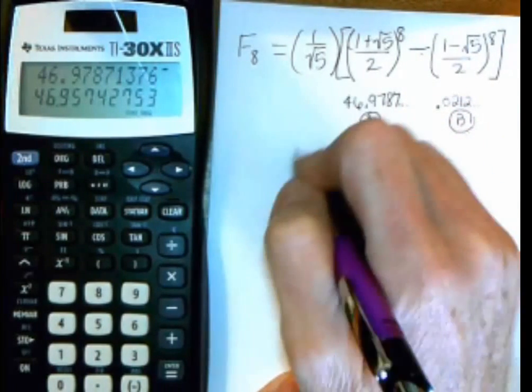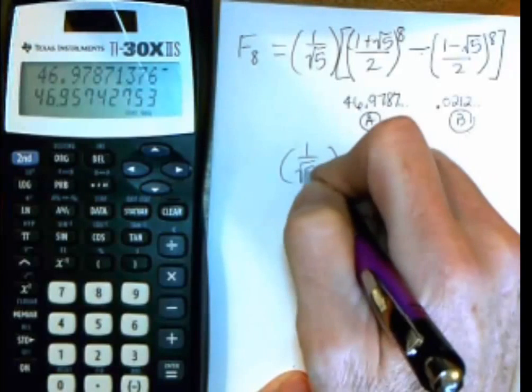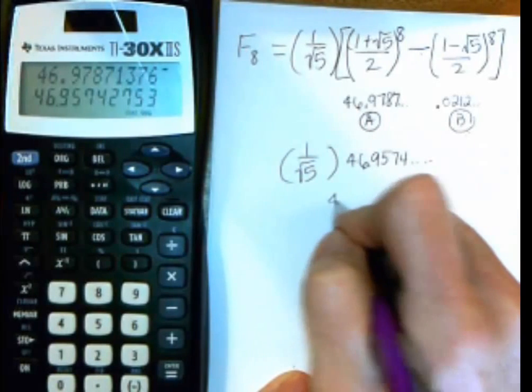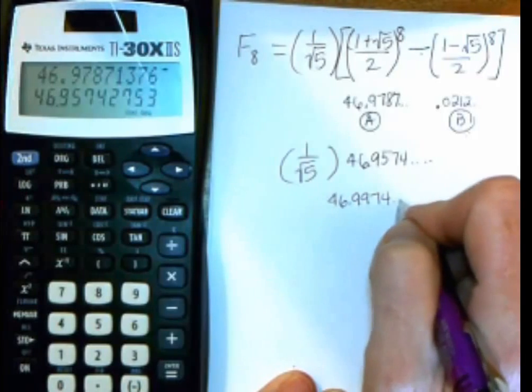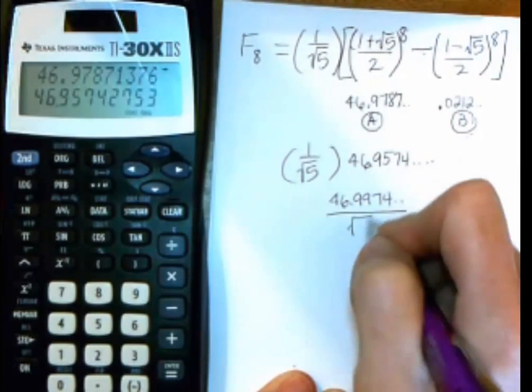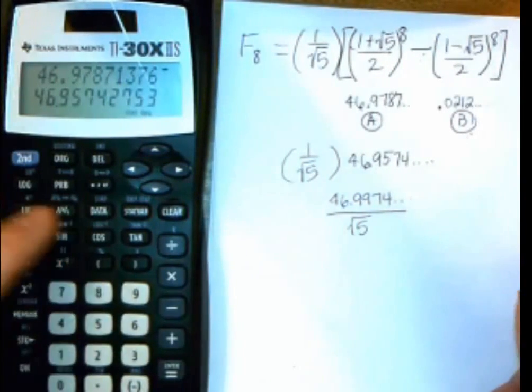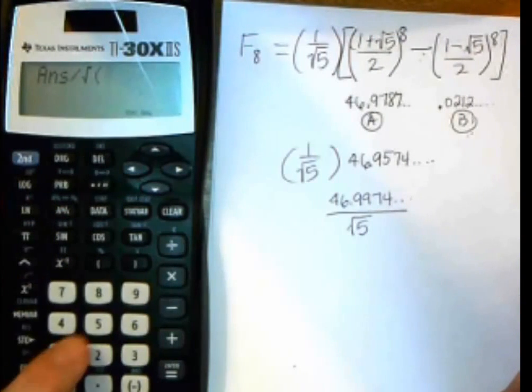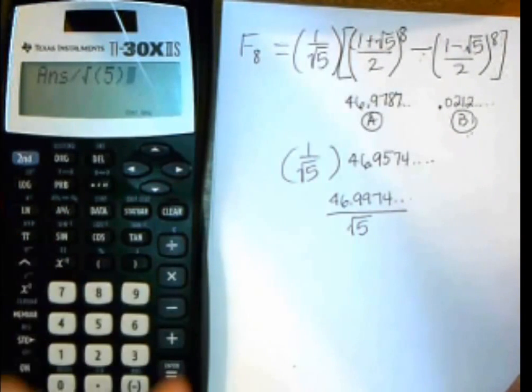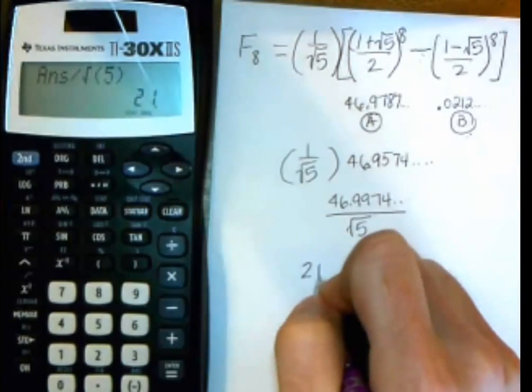Remember, I still need to multiply it by the 1 over square root of 5. Which is the same thing as taking that number, dividing by square root of 5. So I'll just do divide by. Put in my square root. 5. Done. And look at that. I get 21.